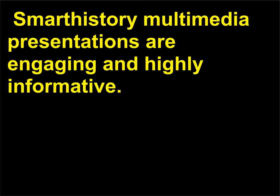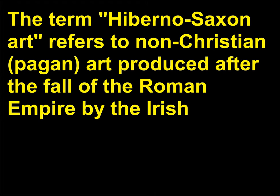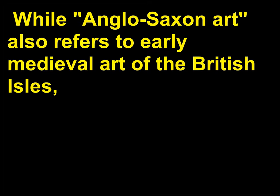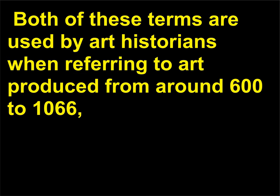What is the difference between Hiberno-Saxon art and Anglo-Saxon art? The term Hiberno-Saxon art refers to non-Christian, pagan art produced after the fall of the Roman Empire by the Irish (known as Hibernians) and the Anglo-Saxon peoples of Southern England. While Anglo-Saxon art also refers to early medieval art of the British Isles, it is more closely associated with Christian themes and subject matter. Both terms are used by art historians when referring to art produced from around 600 to 1066, the date of the Norman Conquest of Britain.